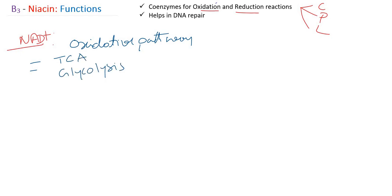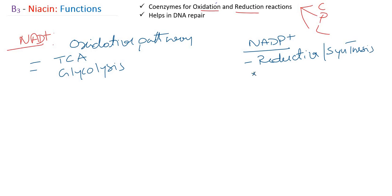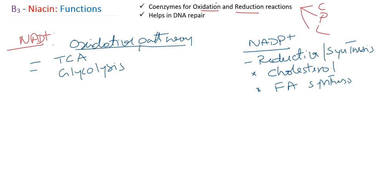We can also see NAD+ involvement in lipid metabolism. NADP+ on the other hand is involved in the reductive or synthetic pathway — for example, cholesterol synthesis or fatty acid synthesis. All these synthesis pathways require NADP+, whereas catabolic pathways like the citric acid cycle, TCA cycle, or glycolysis utilize NAD+.